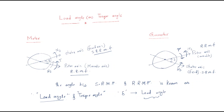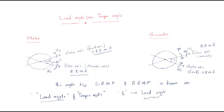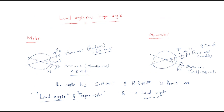In generating mode, the electromagnetic torque is opposite to the rotor axis, and in this mode the rotor axis leads the stator axis. Just look at here — the rotor axis leads the stator axis, meaning the rotor axis is in the starting leading position.